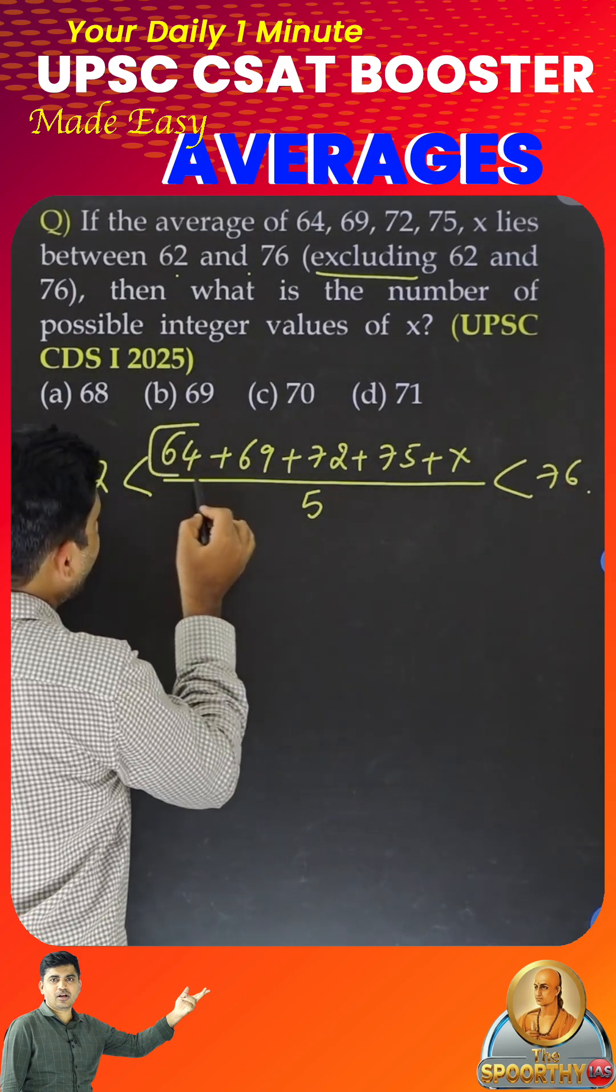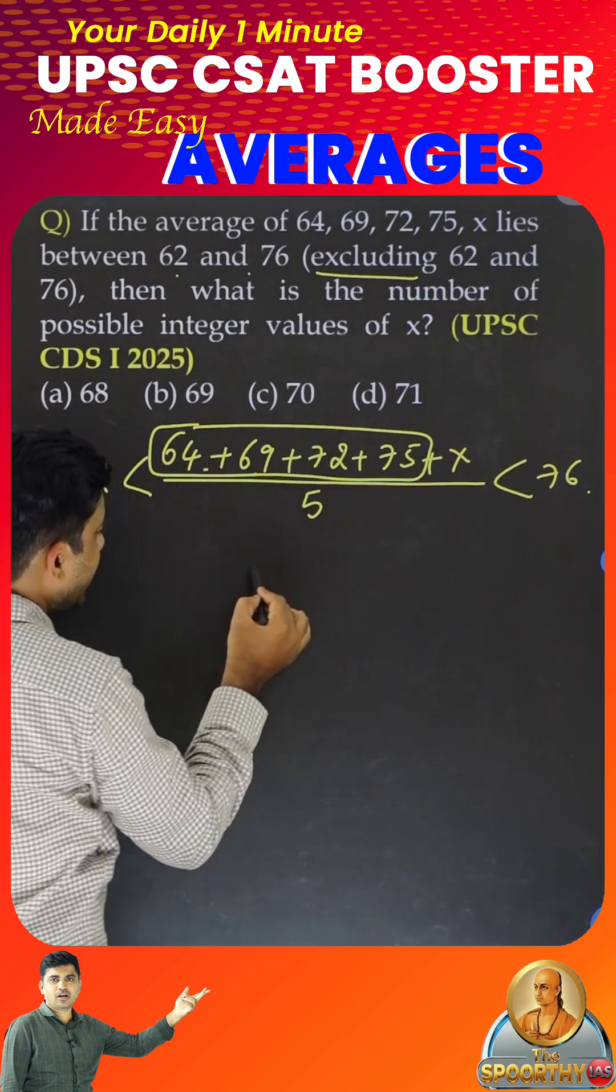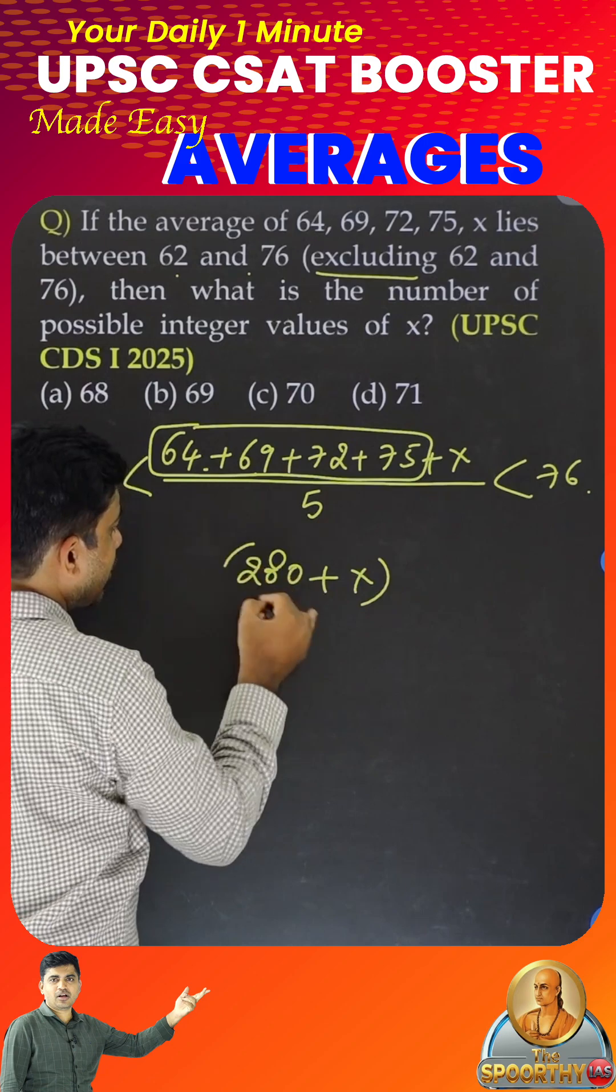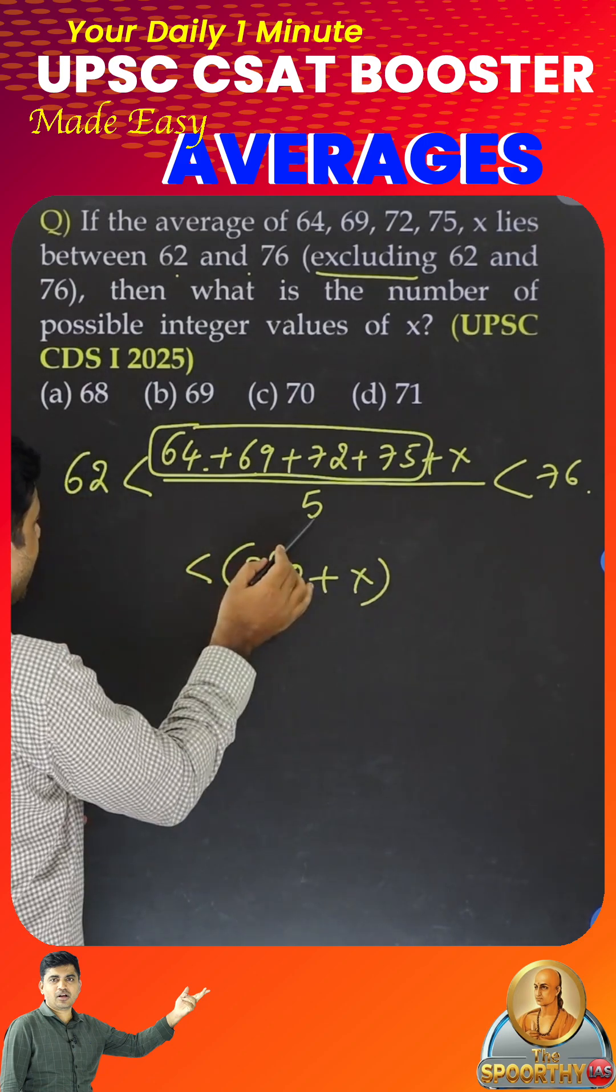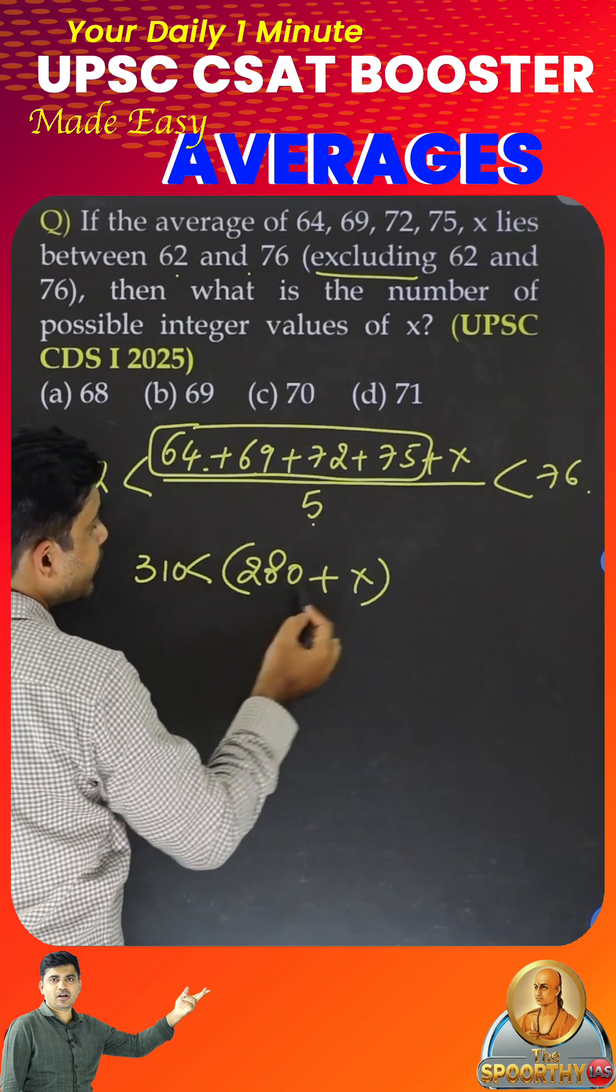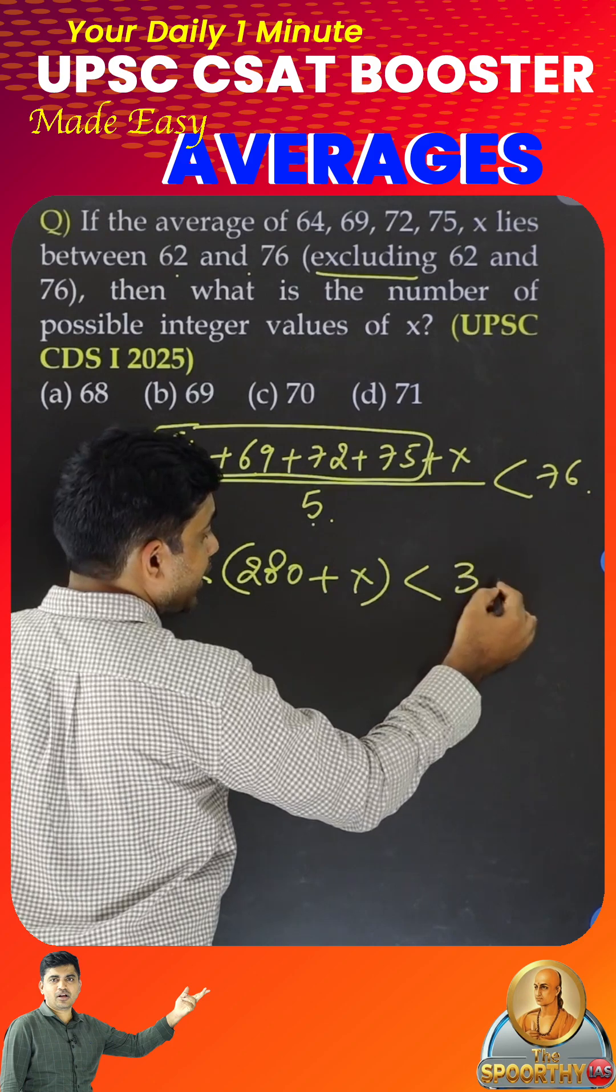What is the sum of these four numbers? It is 280. So, 280 plus X, now greater than 5 into 62, which is 310. 5 into 76 is 350 and 30, 380.